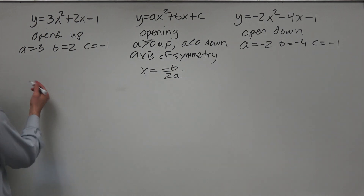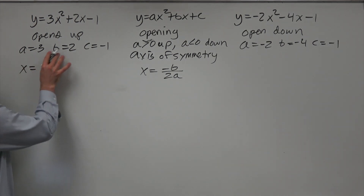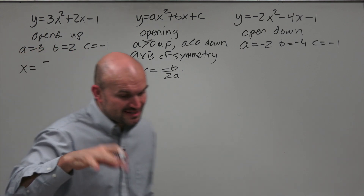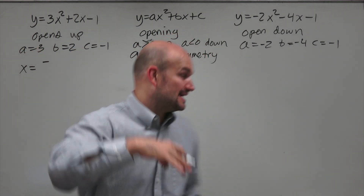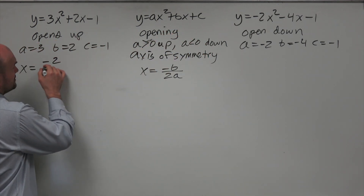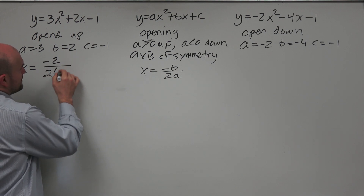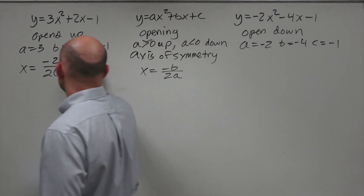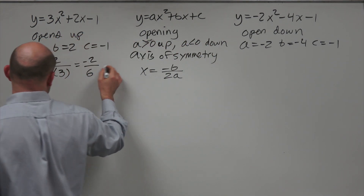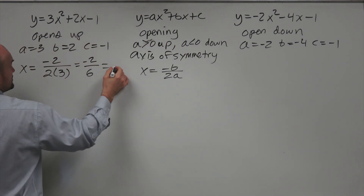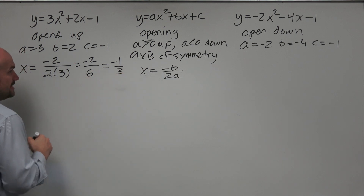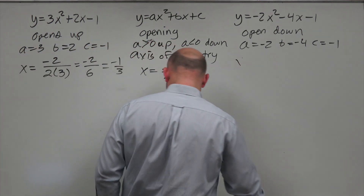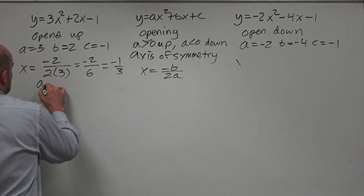Now let's plug them in. For the first equation, we take the opposite of B — so negative 2 — divided by 2 times 3. Two times 3 gives us 6, so this gives us negative 2 over 6, which reduces to negative one-third. So x equals negative one-third is the axis of symmetry.